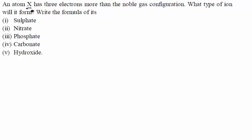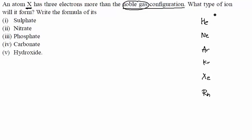We have this question: an atom X has three electrons more than the noble gas configuration. First we have to understand the term 'noble gas configuration' and what noble gases are. Noble gases are helium, neon, argon, krypton, xenon, and radon.